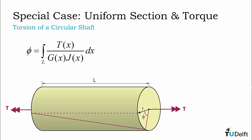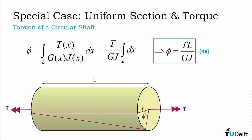Luckily, there are several special cases where some of these are constant. The first special case is that of a circular shaft with uniform cross-section and internal torque along its length. This is the simplest case, where the internal torque, shear modulus, and polar moment of inertia are all constants. This allows us to remove these quantities from the integral. The integral of dx over the length of the shaft is precisely the shaft length, simplifying the result to the expression that the angle of twist equals the internal torque times the shaft length divided by the product of the shear modulus and the polar moment of inertia.